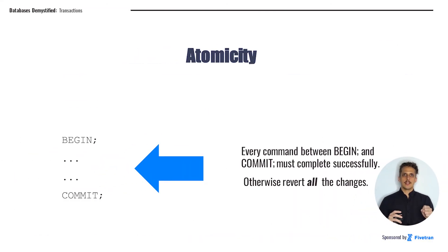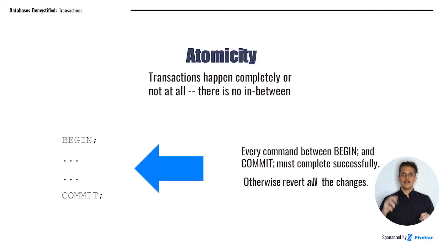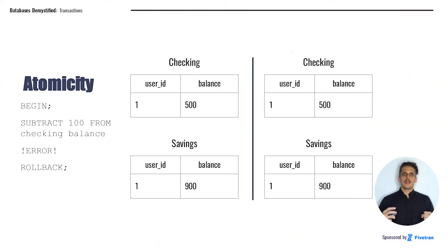When we say that a transaction has atomicity, what we mean is that the transactions happen completely or not at all — there is no in-between. Transactions don't half-complete; either a transaction completes all the way or it fails all the way. Every command between BEGIN and COMMIT must complete successfully; otherwise, we're going to revert all of the changes that were attempted. On the left side, we have the starting state and on the right side, we have the state after the transaction. We're going to move $100 from the checking account to the savings account. Since the transaction commits successfully, we can see the changes reflected in our account on the right-hand side. When we encounter an error for any reason at all, after we roll back, the values in our accounts are back to what they were before we started the transaction — so no changes were made.